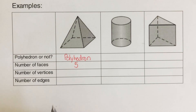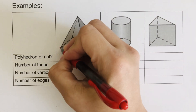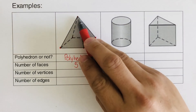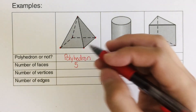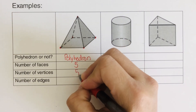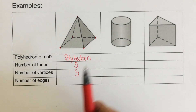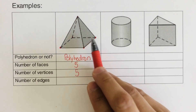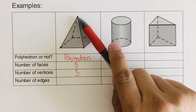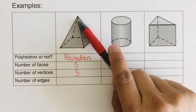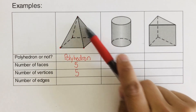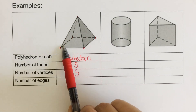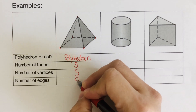Now let's look at the vertices. Vertices refers to the corners. There's one on the tip and four at the bottom, so there's a total of five vertices. And then the edges — the edges refers to the line that connects from one vertex to the other vertex. The ones connected to the tip are one, two, three, and four. And then at the bottom: five, six, seven, and eight. So there are eight edges for this.